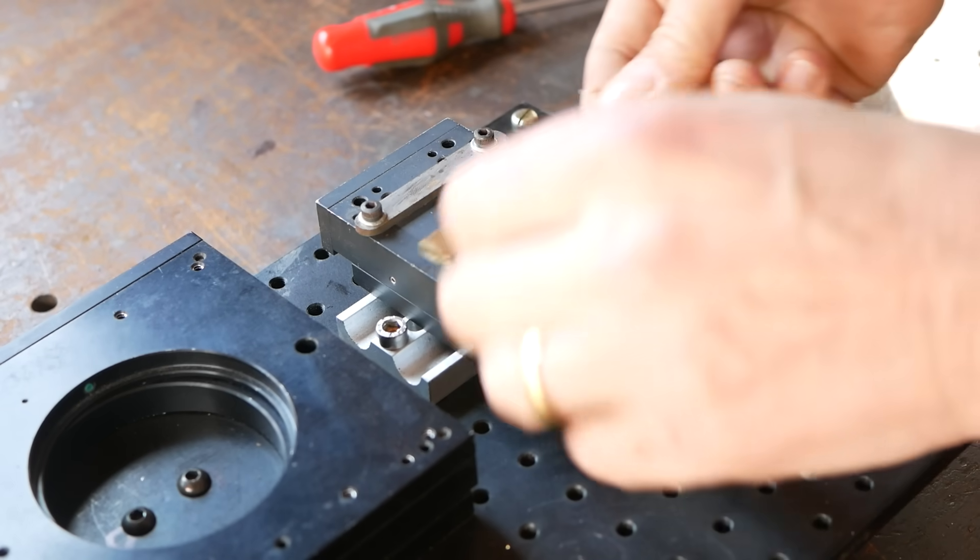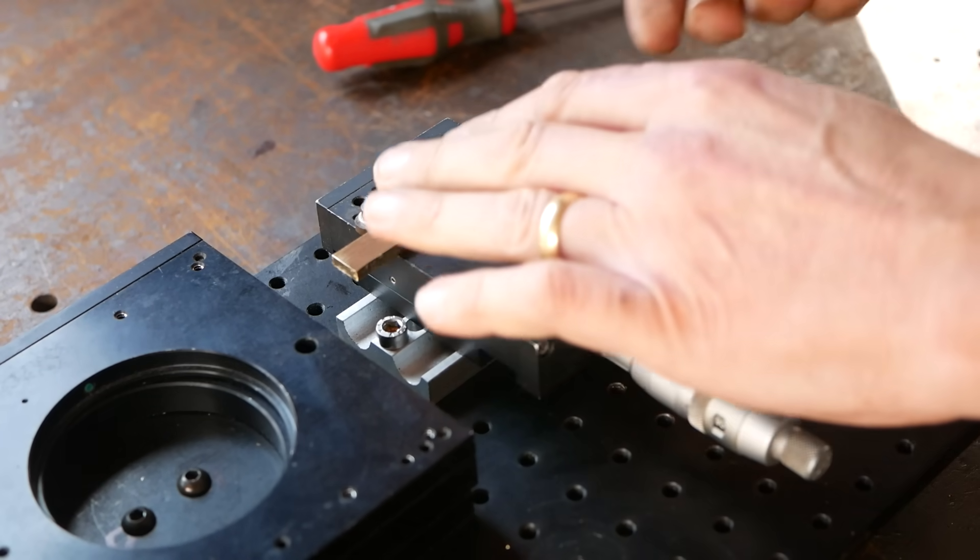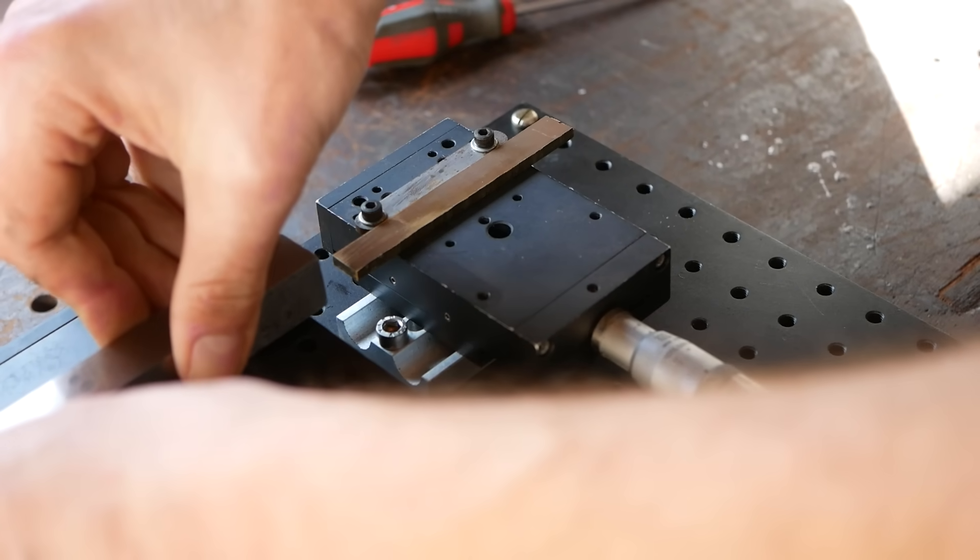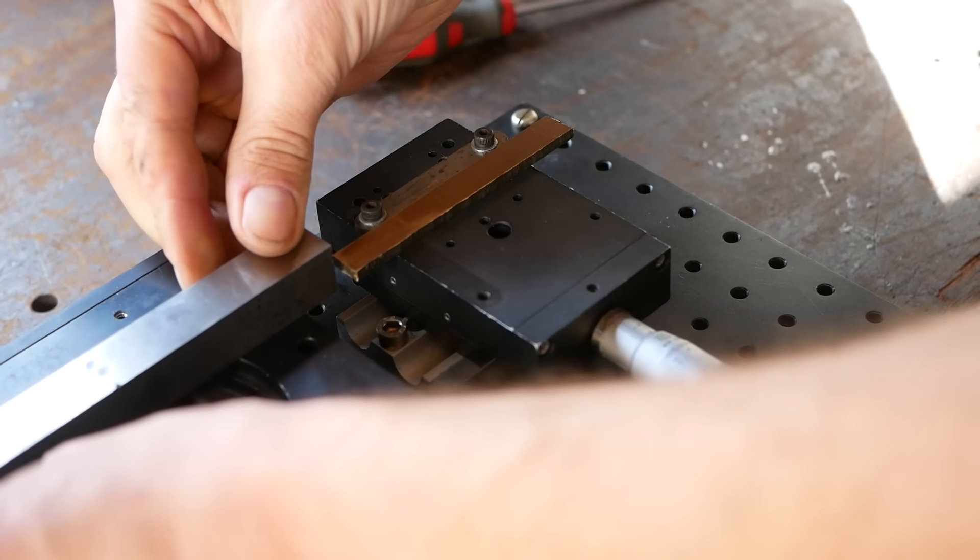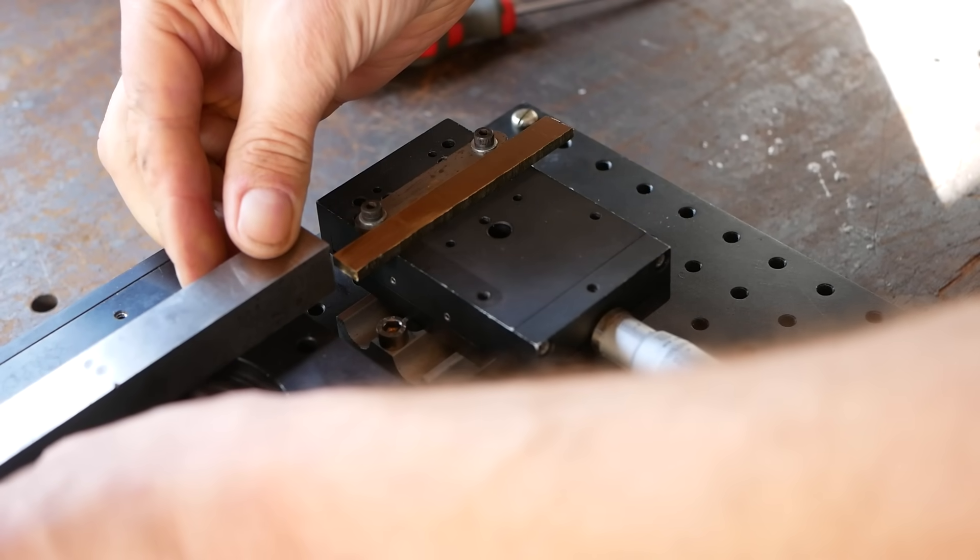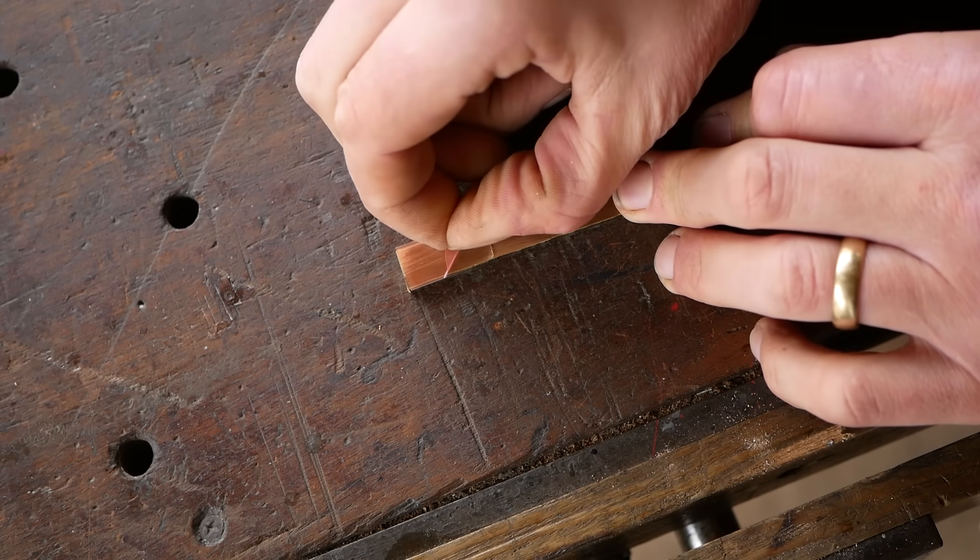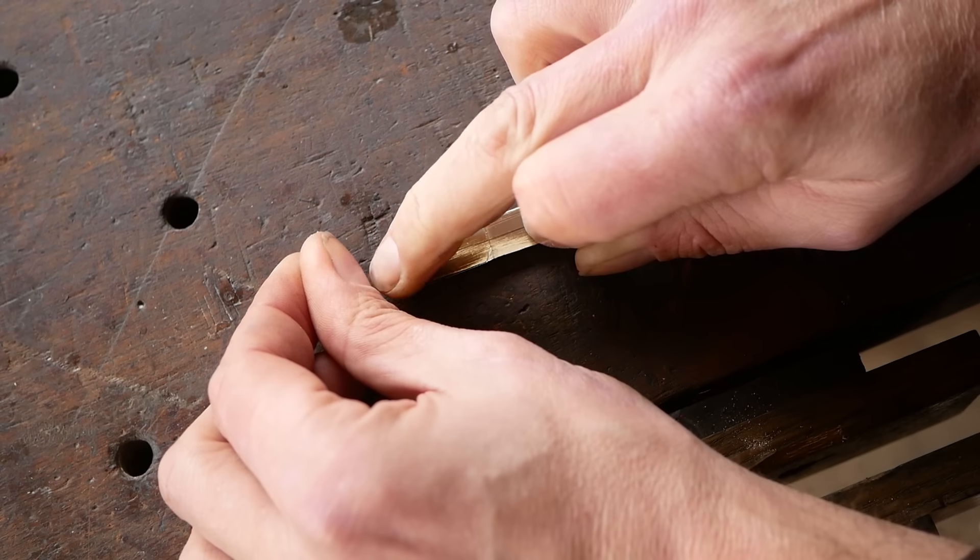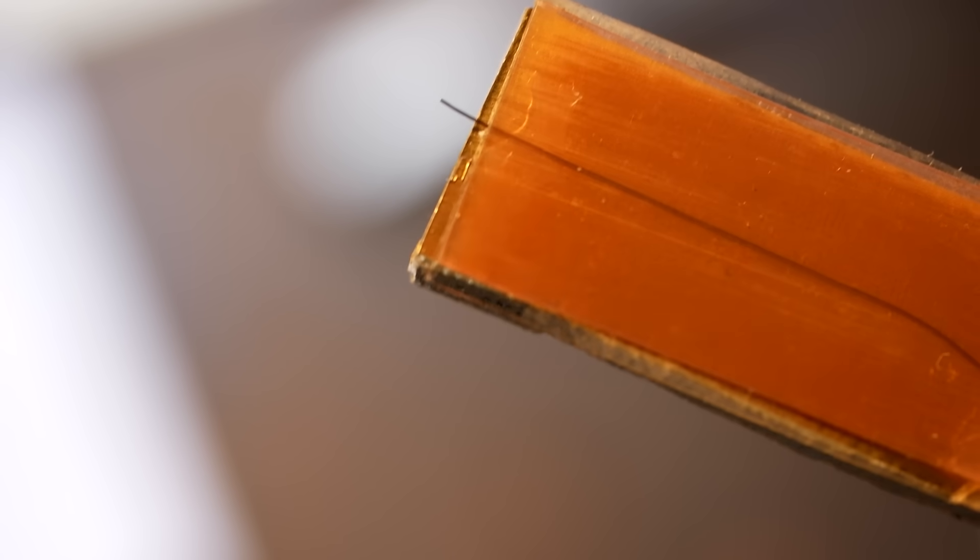Here Alistair shows the positioning of two blocks. The test edges will be clamped to the steel block and the hair is taped to the brass strip. The hair is then cut to length.